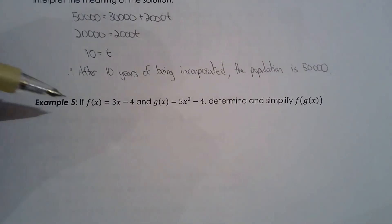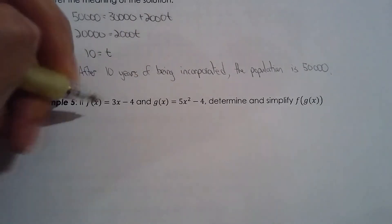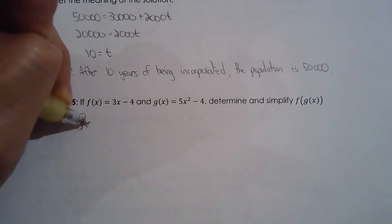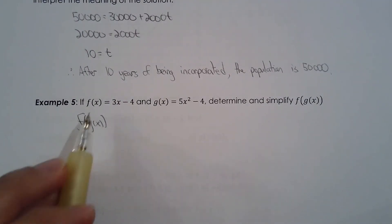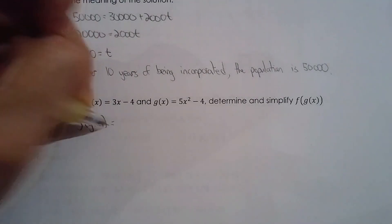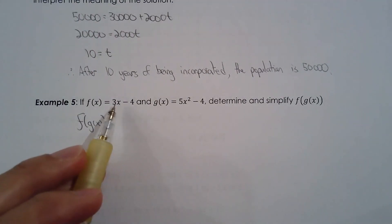All right, so we have f of x is 3x minus 4, g of x is 5x squared minus 4. Determine and simplify f of g of x. You know what, this might look challenging, but break it apart. g of x is the input, so you're working with f of x and your input is g of x. So it will no longer be 3x, you can write it as 3 times g of x minus 4.